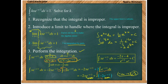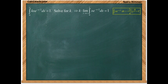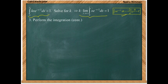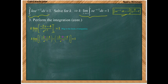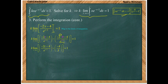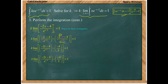We now plug in the limits of integration. Plug in t for x and 0 for x. When we plug in 0, the negative 2 times 0 term zeroes out, leaving negative 4, and e to the zero over 2 is 1, so we get negative 4 over 1, which is negative 4. Subtracting negative 4 gives us positive 4 from the lower limit.